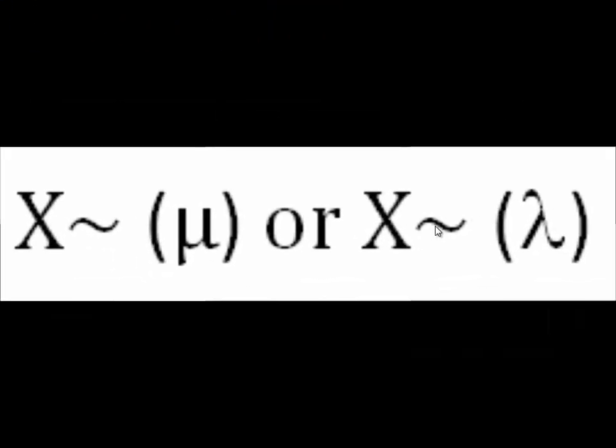This is written as X follows mu, but really it's lambda. Lambda is the Poisson distribution symbol. That's why you'll see that sometimes in there as well. So I just wanted you to know that it exists. In our book we use the mu, but you may see lambda in the future.